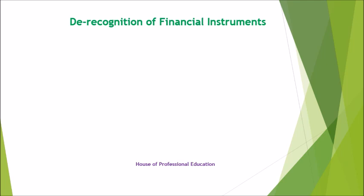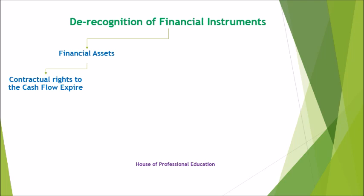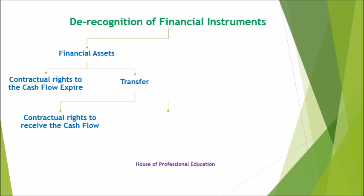An entity shall de-recognize a financial asset when and only when the contractual right to the cash flows from the financial asset expires, or it transfers the financial asset. An entity transfers a financial asset if and only if it transfers the contractual rights to receive the cash flows of the financial asset, or retains the contractual rights to receive the cash flows but assumes a contractual obligation to pay the cash flows to one or more recipients in an arrangement meeting three conditions: it must be a back-to-back arrangement; it is prohibited by the terms of the transfer contract from selling or pledging the original asset; and the entity has an obligation to remit any cash flows it collects on behalf of the eventual recipients without material delay.